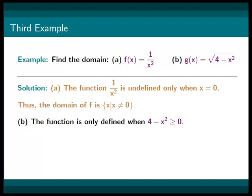For function g, we know that the function is only defined when 4 minus x squared is greater or equal to 0, because you cannot take the square root of a negative number.